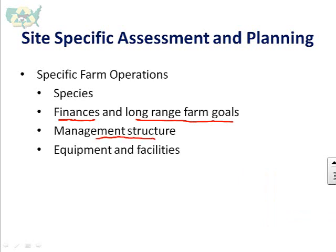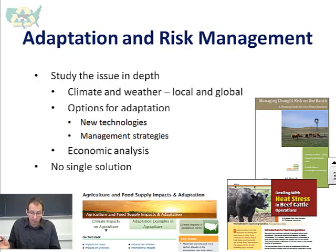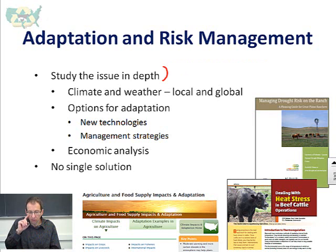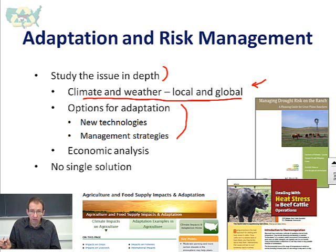Beyond climate considerations, we have to look at the specific farm operation. It's species-specific — a poultry farm versus a swine farm versus a dairy farm versus a beef farm will have different adaptation practices. We also need to look at finances and long-range farm goals, the management structure such as vertical integration, and current equipment and facilities — all factors in that decision-making process. We have to study the issue in depth and look at options including new technologies and management strategies.